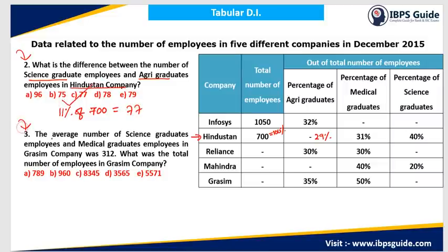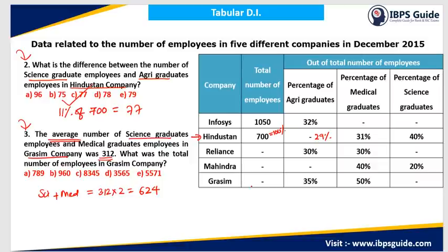Question 3: The average number of science graduate employees and medical graduate employees in Grasim company was 312. Since this is the average of two values, their total = 312 × 2 = 624. In Grasim, agricultural graduates are 35%, medical graduates are 50%, so total of those two is 85%, leaving science graduates at 15%.